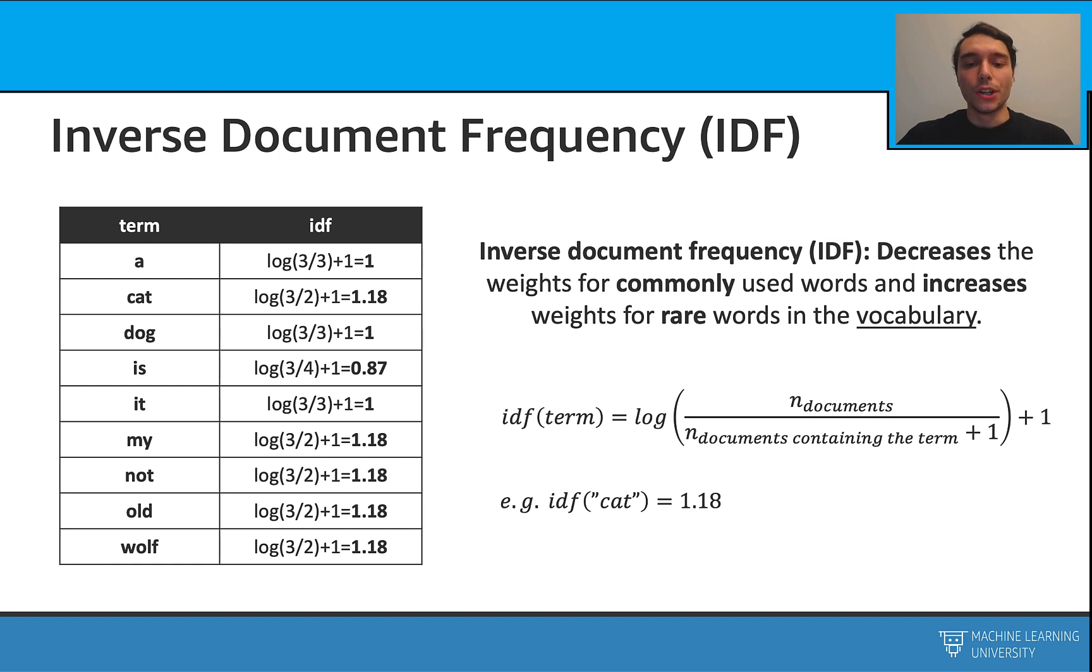For example, for the word cat in our vocabulary, the IDF score is 1.18.